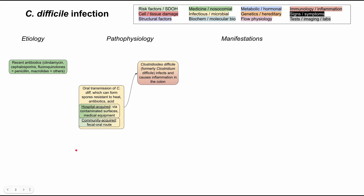The most common way — and the most prominent you'll probably see in the hospital — is from recent antibiotics. Some antibiotics cause this more than others. Clindamycin, cephalosporins, and fluoroquinolones are the most common culprits. Penicillins and macrolides also predispose you to C. diff, but not as much. All other antibiotics can cause it but are less likely. What's happening is that the antibiotics you're taking destroy the normal intestinal bacterial flora that normally suppresses C. diff overgrowth.